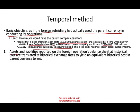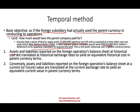Assets and liabilities reported on the foreign operation balance sheet at historical cost are translated at the historical exchange rate to yield an equivalent historical cost in the parent currency. Simply put, if assets or liabilities are reported at historical cost, you use the historical exchange rate. On the other hand, assets and liabilities reported at current value — that is, market or future value — are translated at the current exchange rate to yield an equivalent current value in the parent currency.